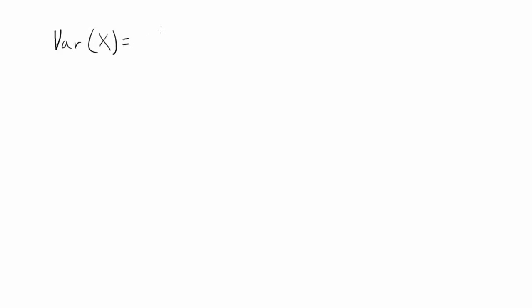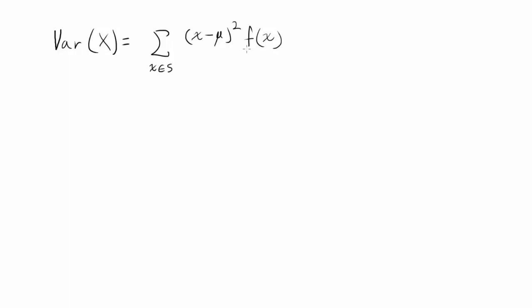For a probability distribution, by definition, the variance of some random variable x is equal to the sum over all x values belonging to some space of the random variable. You find the difference from the mean — x minus mu — square it, and multiply by the probability of x. You can write this as P of x, or use a probability distribution function such as f of x, also called the probability mass function.